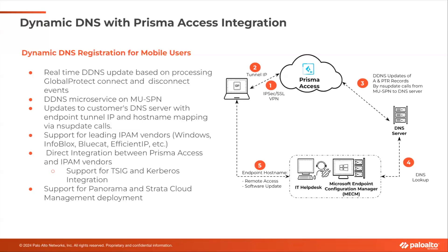So in that case, the customer's DNS server will know to maintain the same FQDN with the updated tunnel IP address. When IT help desk needs to upgrade endpoints or do remote troubleshooting, it will do a reverse DNS lookup, get the correct updated IP address of the endpoint, then perform the troubleshooting.